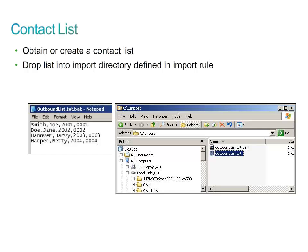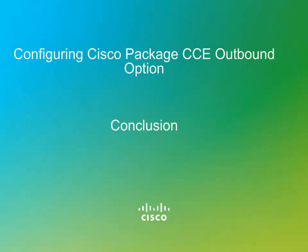You are finally ready to start your campaign. To start your campaign, make sure you have agents available, the dialing time in the campaign is enabled, and a contact list has been uploaded. This presentation has provided you with an overview of the tasks required to configure Cisco Outbound Option in a Package CCE environment.